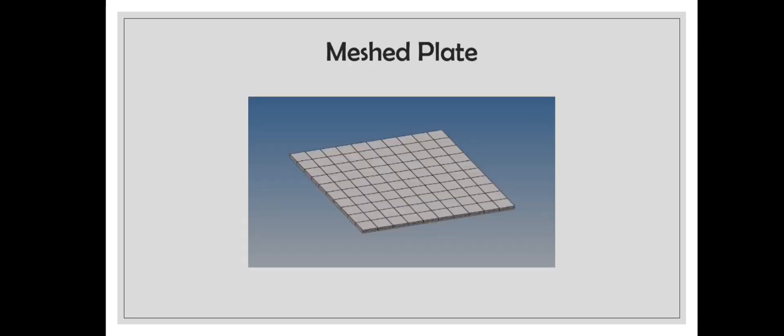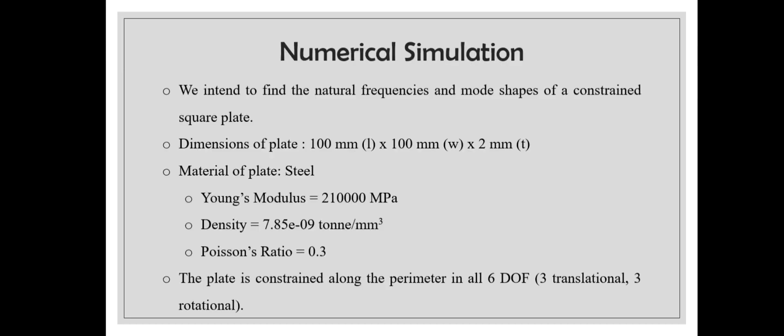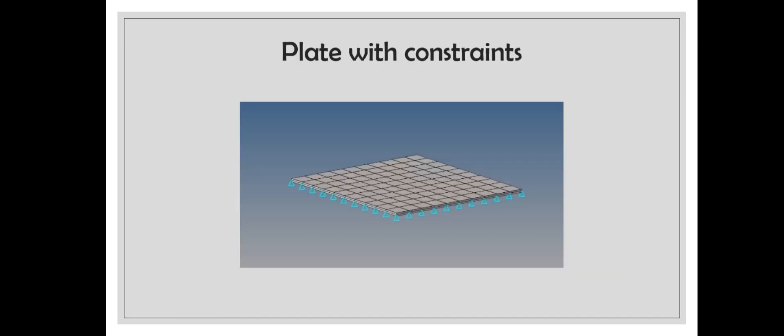Here's an image of the plate we used in the previous video. The dimensions are the same, 100 by 100 by 2. The materials are also the same: steel with all the material properties—Young's modulus, density, Poisson's ratio. The only difference is it's constrained along the perimeter in all six degrees of freedom: three translational and three rotational. So it'll look like this, with all the edges constrained.